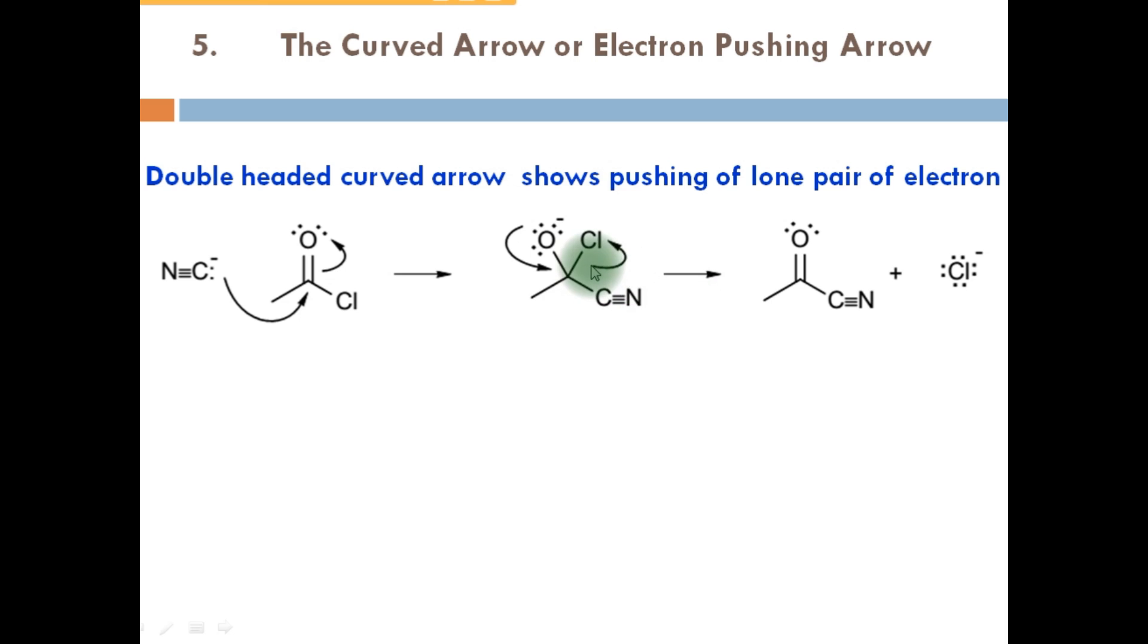Here you can see the double headed curved arrow. This is also double headed curved arrow, but it is straight. This is known as forward arrow, as I have told you in first type of organic arrows.